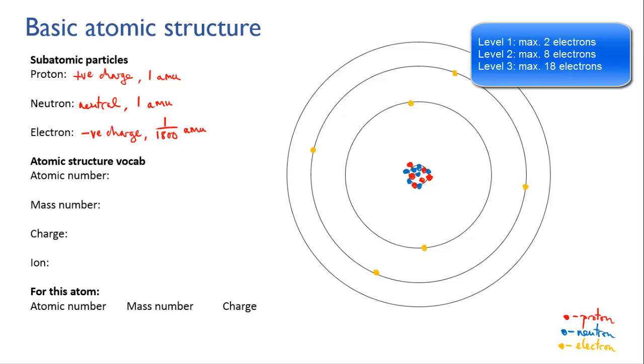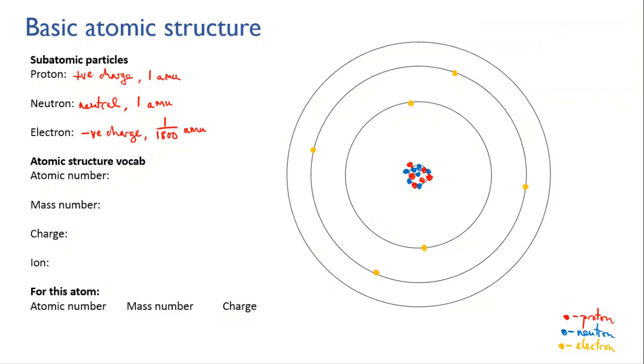The third level, which in this atom is empty, could hold up to 18 electrons. Sometimes you'll hear people talk about the third level being able to hold eight electrons, and there's a good reason for this simplification, but it is a simplification, as are the orbits. We're going to look at this in more depth when we get onto the section on atomic structure, so let's leave that controversy for now.